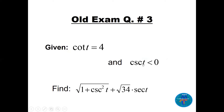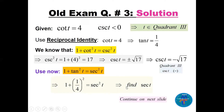Question 3: cot(t) = 4 and csc(t) < 0; find the expression. Since cot(t) is positive, t is in quadrant 1 or 3. Since csc(t) is negative, sine is negative, so t lies in quadrant 3. From the reciprocal, tan(t) = 1/4.